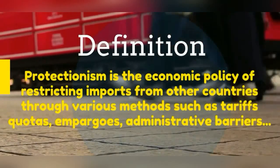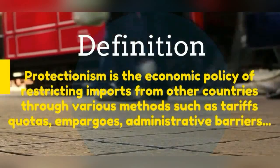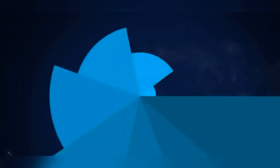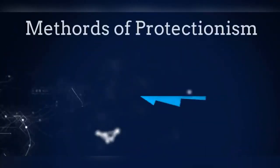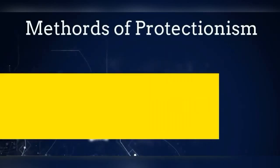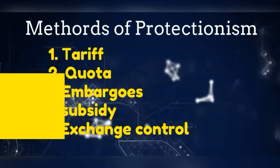The methods include tariffs, quotas, embargoes, administrative barriers, exchange rate controls, and so on. In this session we will be seeing what these measures are in detail. Let's start with the different types of protectionist measures.